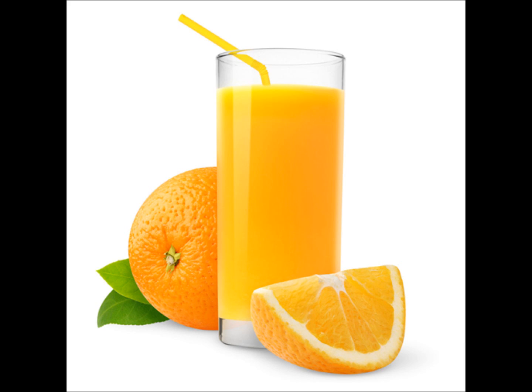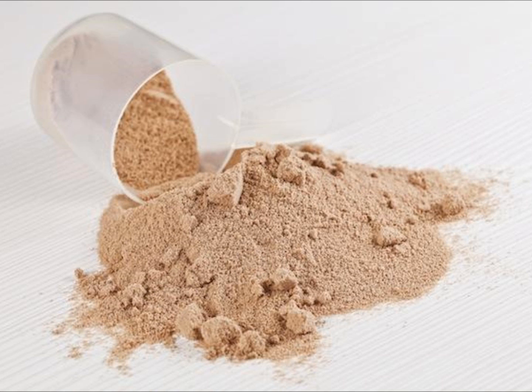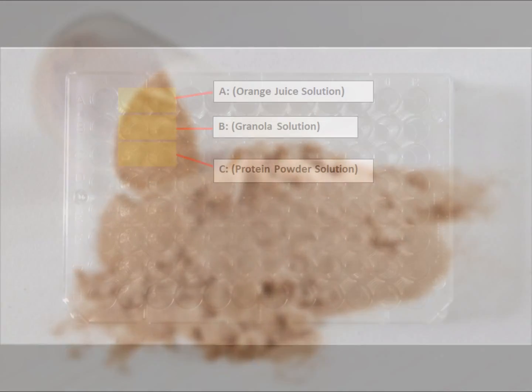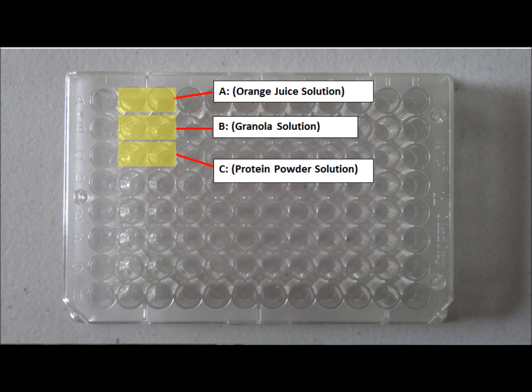The next step is to test our food in question, say for instance, orange juice, granola, and protein powder. Diluted and prepared solutions of these foods are created, and they're also given a designation number or letter.